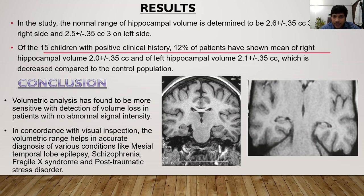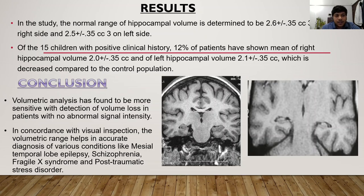Of the 15 children with positive clinical history, 12% of patients showed mean right hippocampal volume of 2.0 ± 0.35 cc and left hippocampal volume of 2.1 ± 0.35 cc, which is decreased in comparison to the control population. The conclusion is that volumetric analysis is more sensitive for detection of volume loss in patients with no abnormal signal intensity. The volumetric range helps in accurate diagnosis of various conditions like mesial temporal lobe epilepsy, schizophrenia, fragile X syndrome and post-traumatic stress disorder.